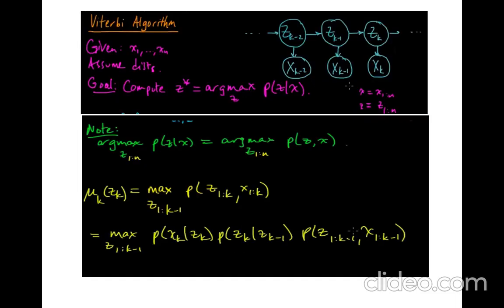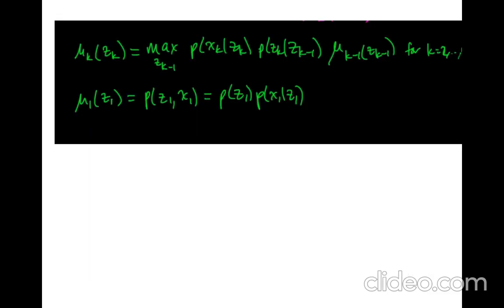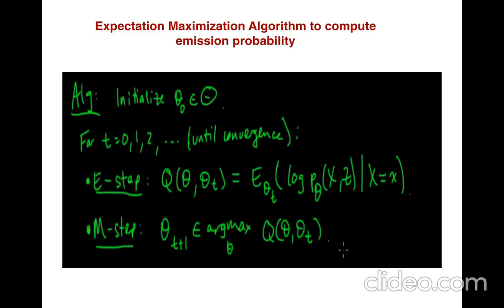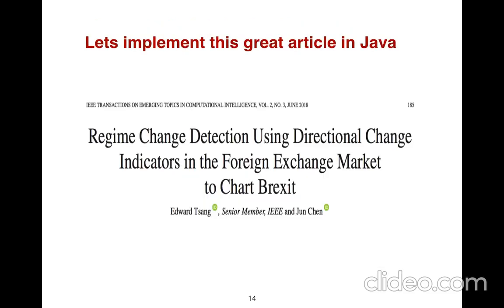You could formulate forex trading problems as a VTRB algorithm, but for now let's skip it. I use expectation maximization algorithm to compute emission probability because in general it's hard to find explicit formulas for different probabilities. I use a numerical and iterative approach. As you see, it has two steps: expectation step and maximization step that I'll show in my Java code.